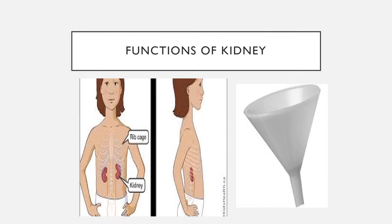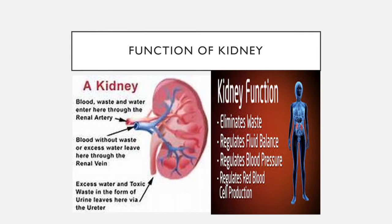In our body, we have two kidneys — right side and left side. The kidneys act as a filter. Blood vessels supply blood to the kidneys, and waste is excreted through urine. The kidneys also help maintain fluid balance in the body.